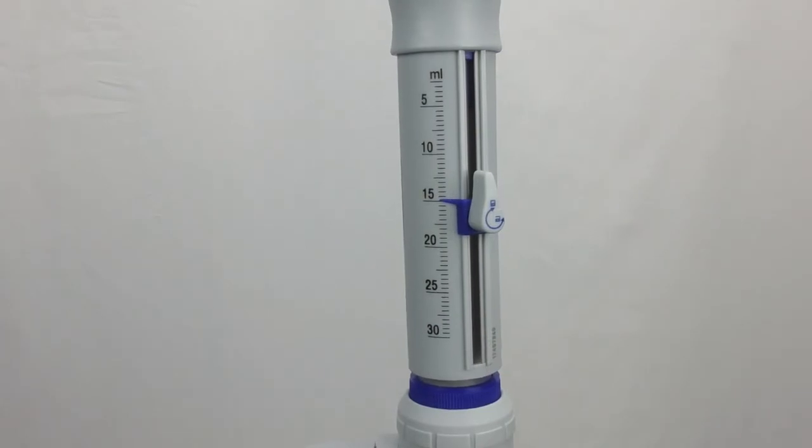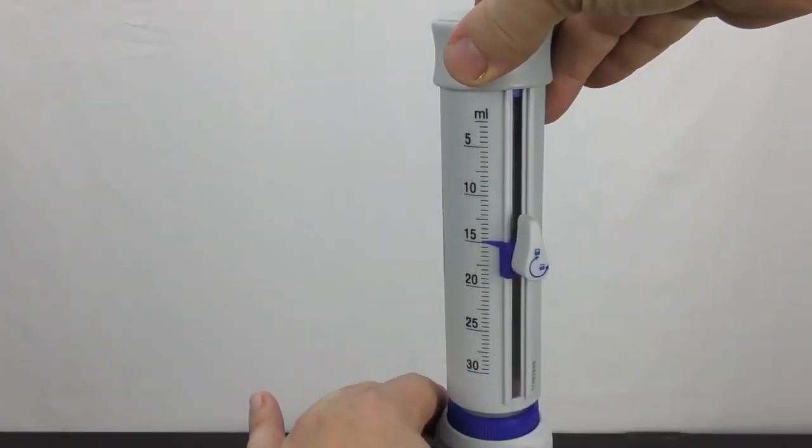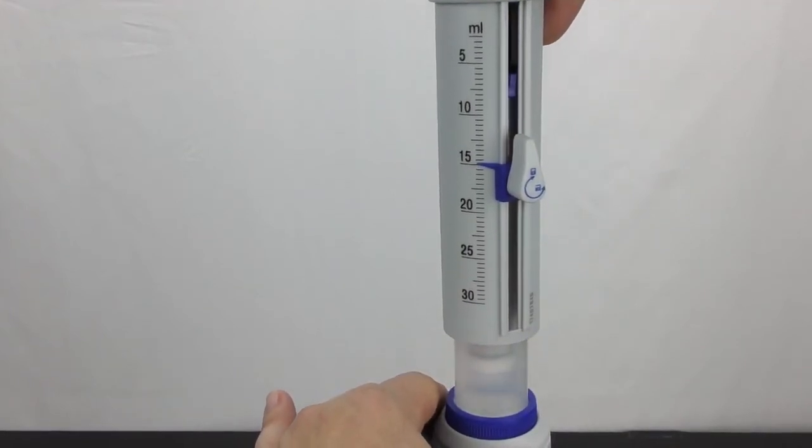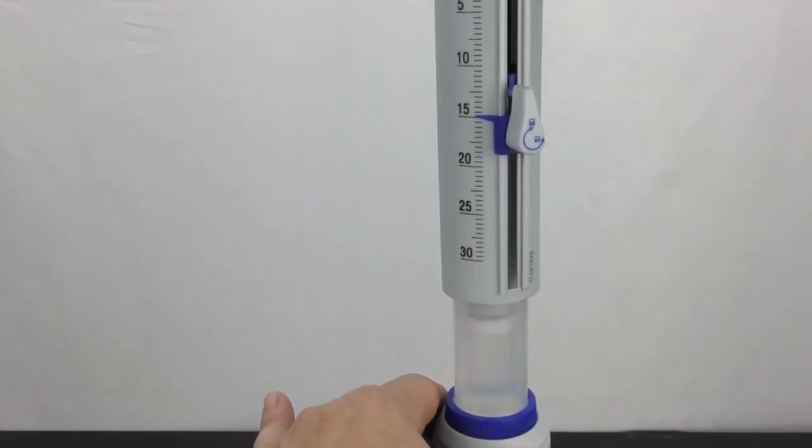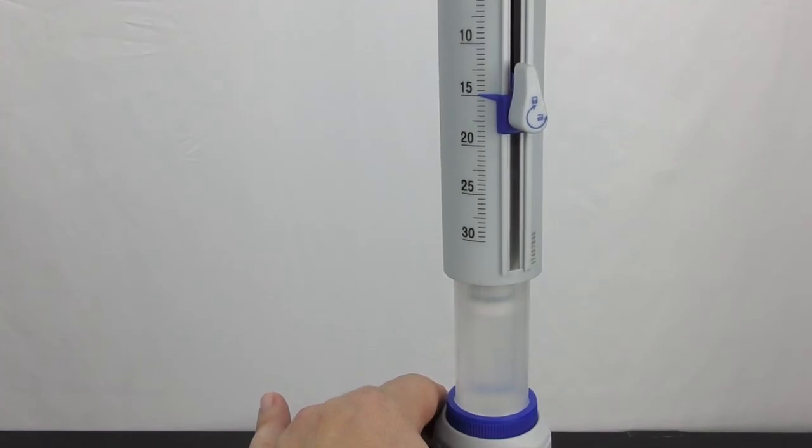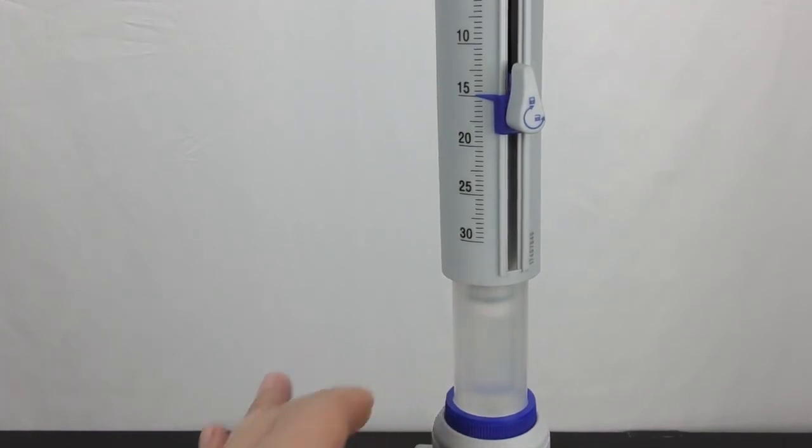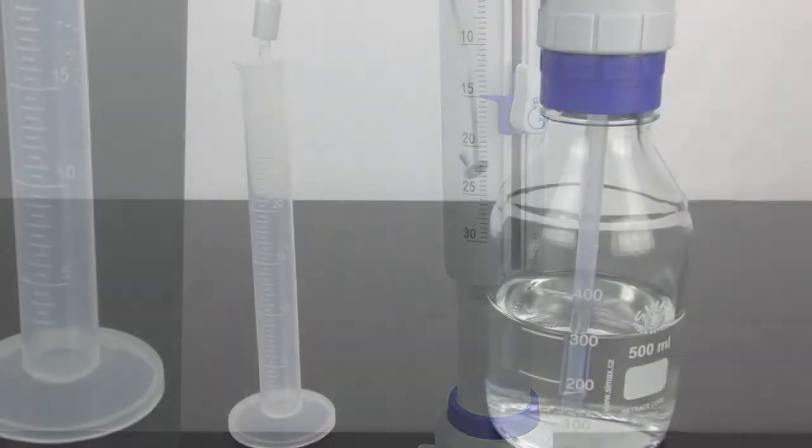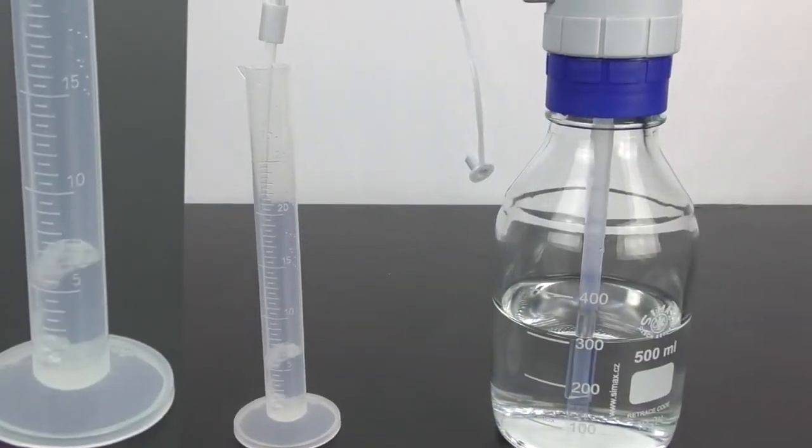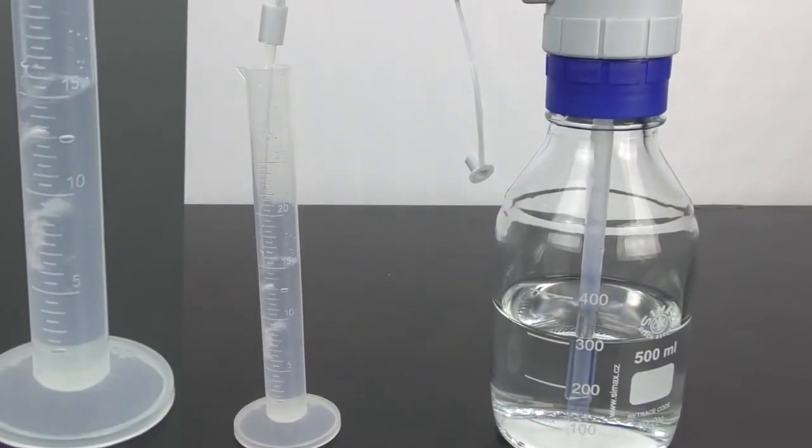I primed the pump and I had this set at 15 milliliters. I am going to pull this up firmly but gently. When you feel resistance you want to stop. That's 15 milliliters that I have pulled into the dispenser. If I simply press down I should be dispensing out exactly 15 milliliters of my solution.